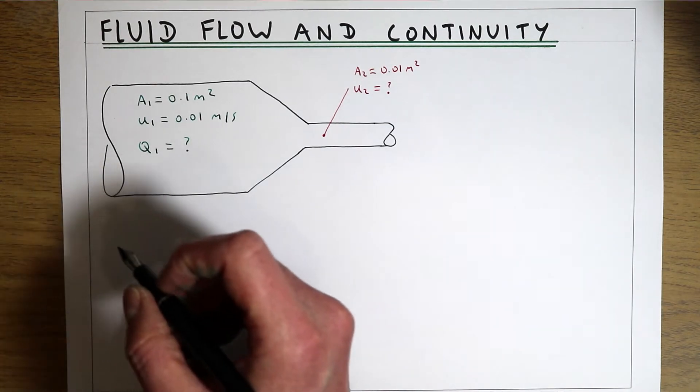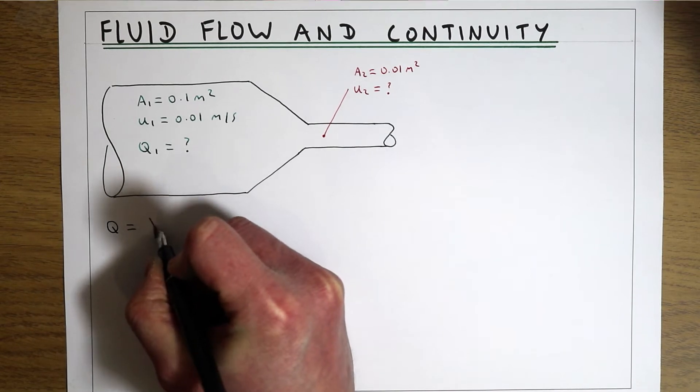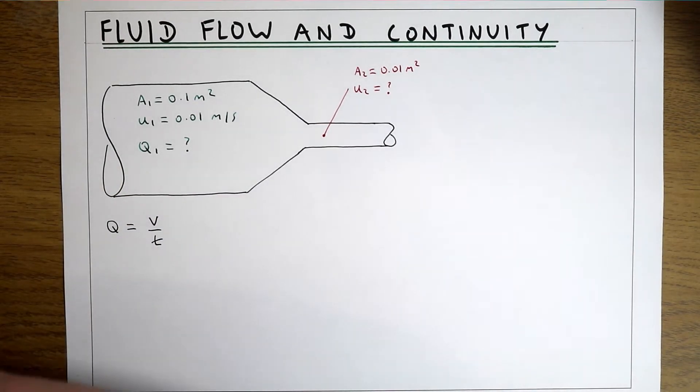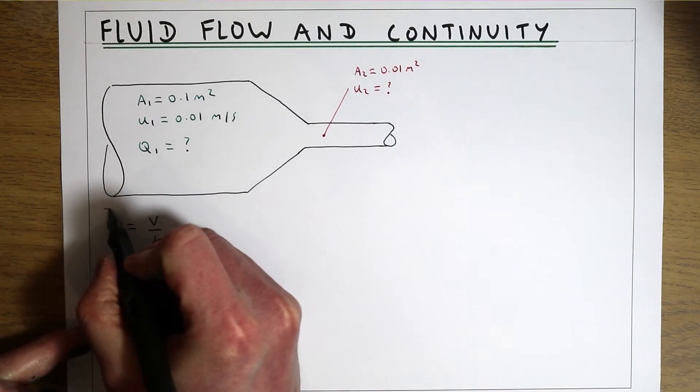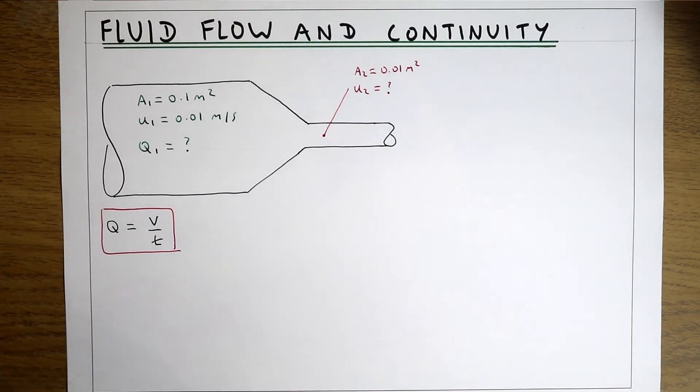We're going to start by thinking that the flow going through any system is the volume per unit time. If you want to think about the flow of fluid through the system, that's the volume of fluid going through the system per unit time.